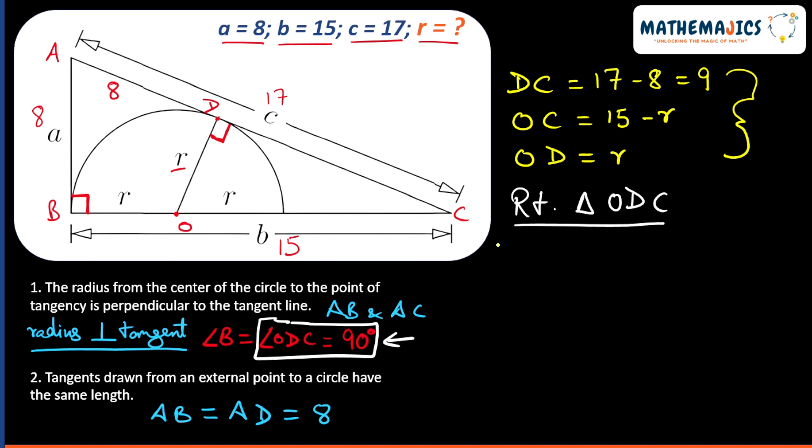Now we will apply Pythagoras theorem: OD² plus DC² is equal to OC². OD is R², DC is 9² equals to (15 - R)².